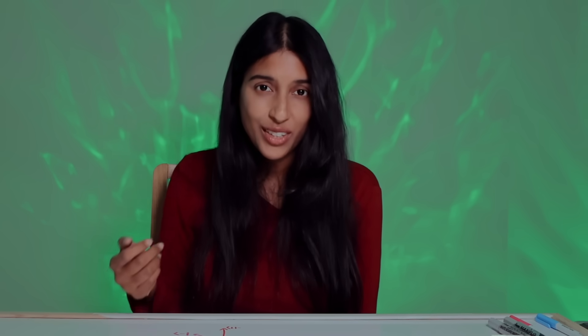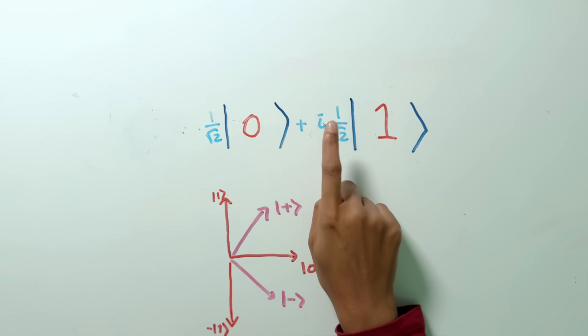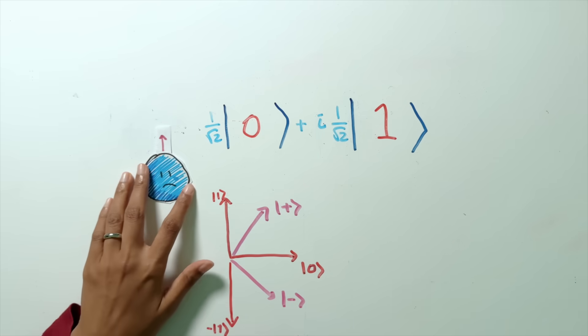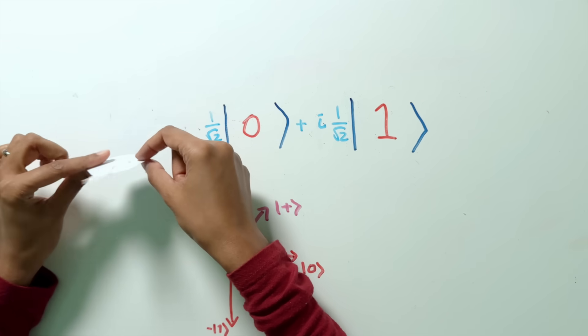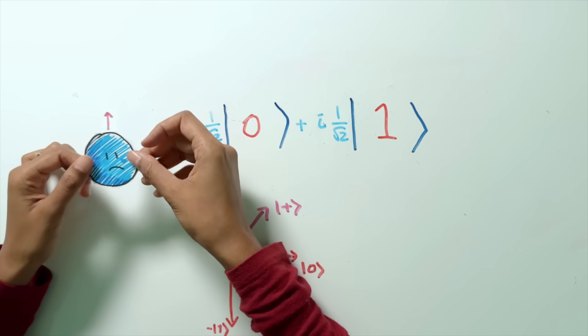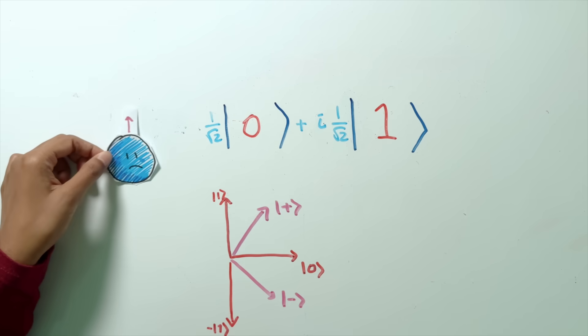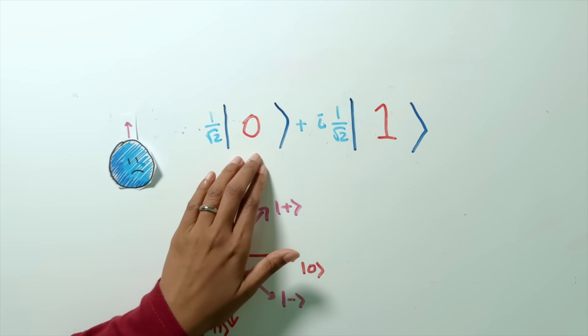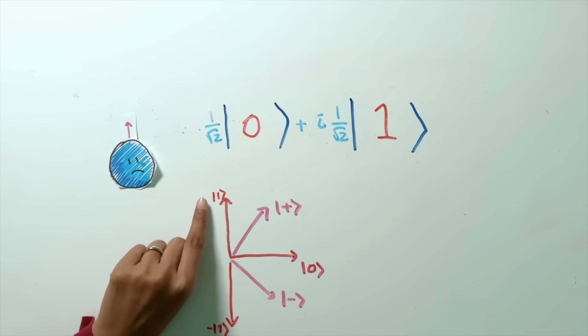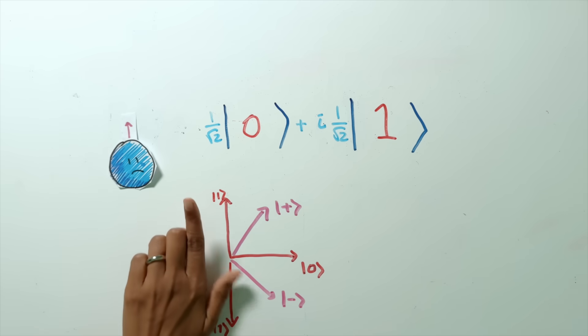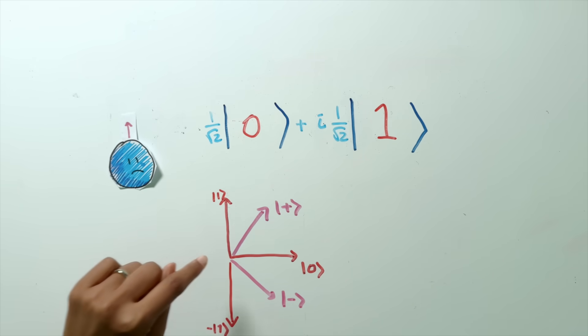These numbers can actually be complex numbers — for example, this state uses the imaginary number i. Going back to the spin of the electron: the spin could be oriented in many directions, including ones that can't be captured by just rotating in the plane. Those are represented through complex numbers. For example, the state zero plus i times one represents a direction pointing in the third dimension — if you think of one pointing one way and negative one pointing the other, i points upwards.